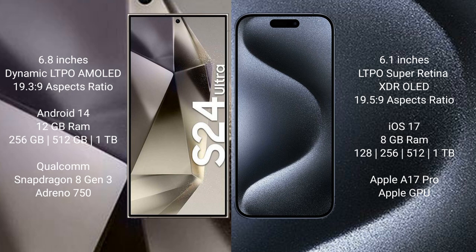Samsung Galaxy S24 Ultra comes with 12GB RAM and 256GB, 512GB, or 1TB internal storage, with a Qualcomm Snapdragon 8 Gen 3 processor and Adreno 750 GPU.